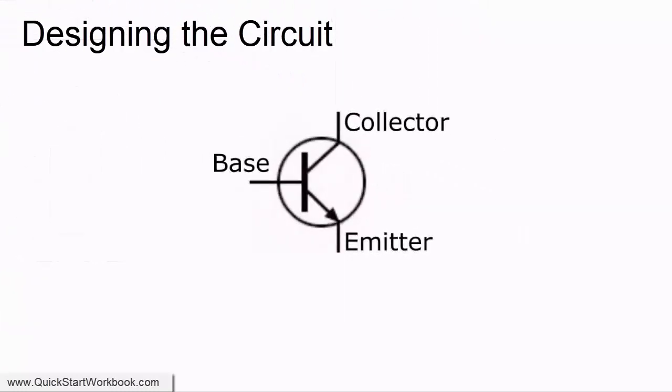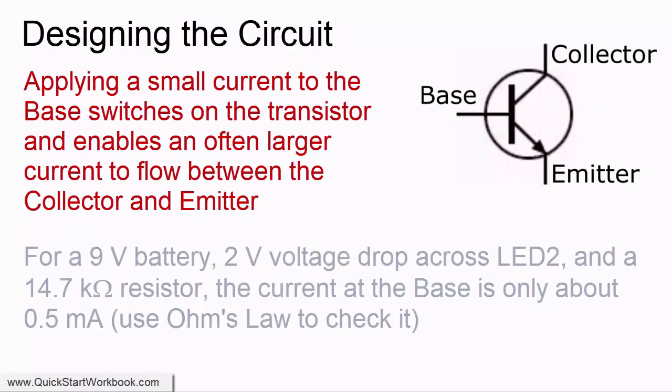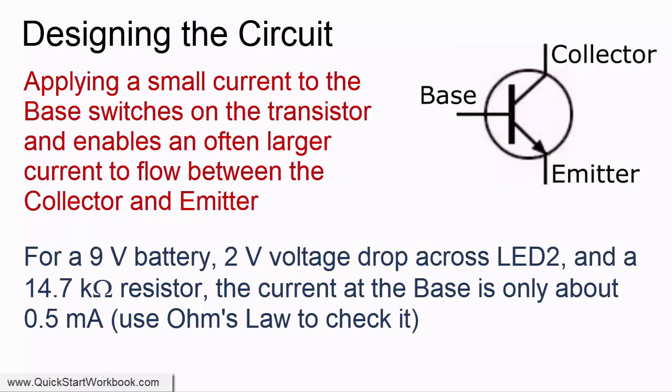To switch the transistor on, a signal needs to be applied to the base. With sufficient current at the base, current can then flow between the collector and the emitter.